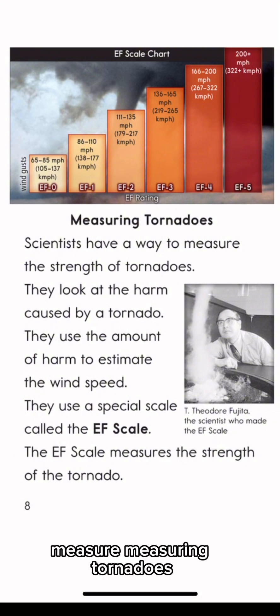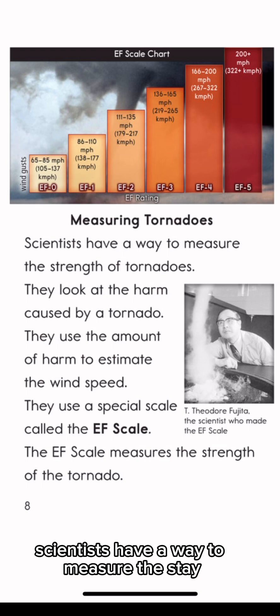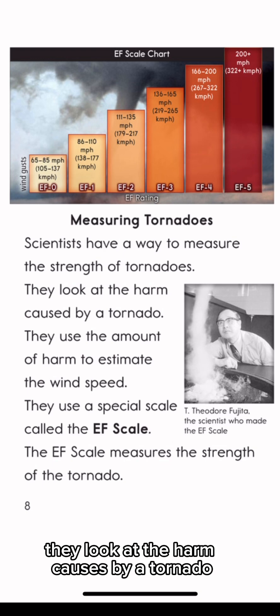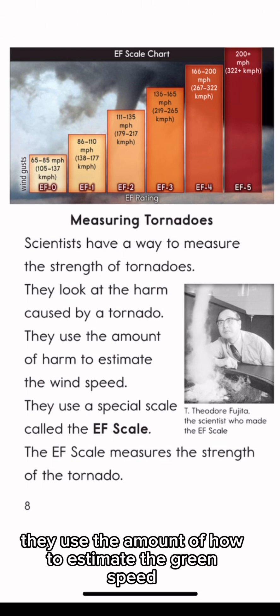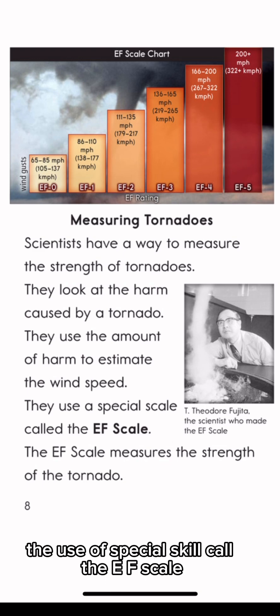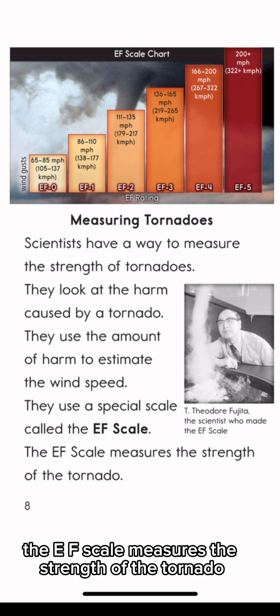Measuring tornadoes. Scientists have a way to measure the strength of tornadoes. They look at the harm caused by a tornado. They use the amount of harm to estimate the wind speed. They use a special scale called the EF scale. The EF scale measures the strength of the tornado.